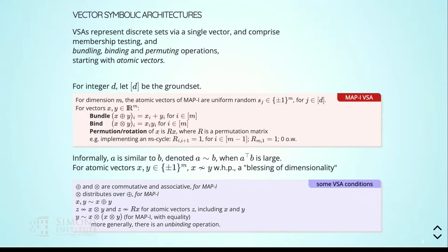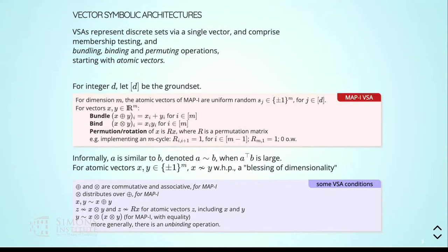The setting is: we have a set of discrete elements — the integers from 1 to d as the ground set — and we look at manipulating subsets of that. For some dimension m, we have atomic vectors of the VSA. For one particular flavor called MAP-I, the atomic vectors are sign vectors: uniform random plus-one/minus-one vectors. We have d of them in m dimensions.